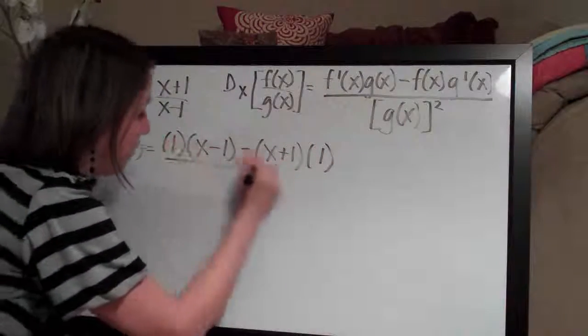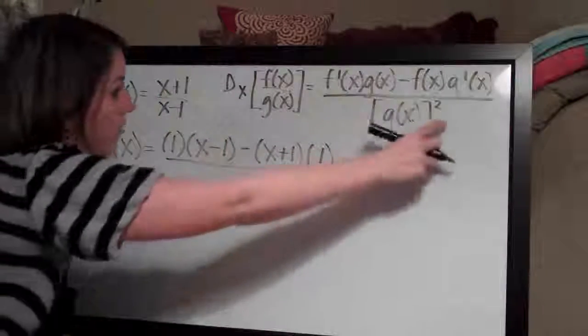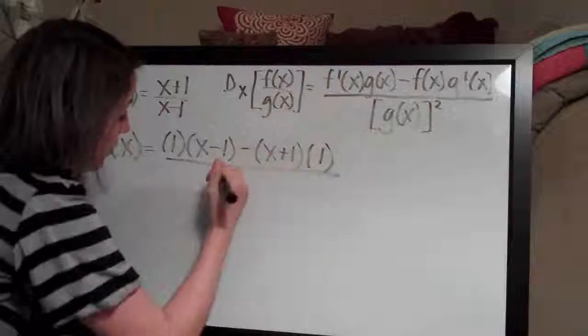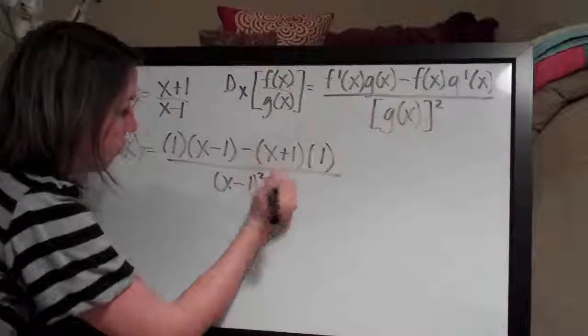And then we divide by the bottom, x minus 1 squared. We square it because that's here in the formula. So we say x minus 1, getting that from there, and then squared.